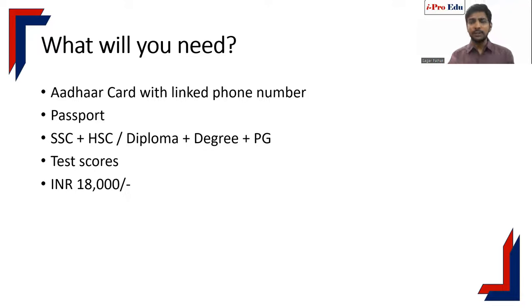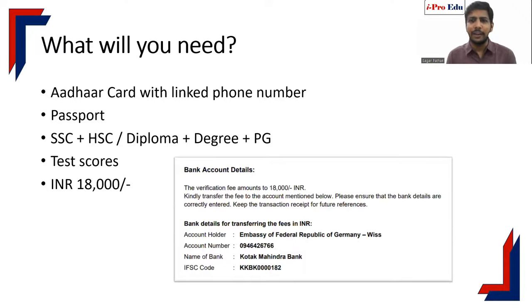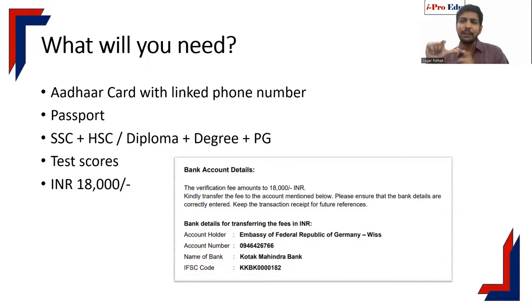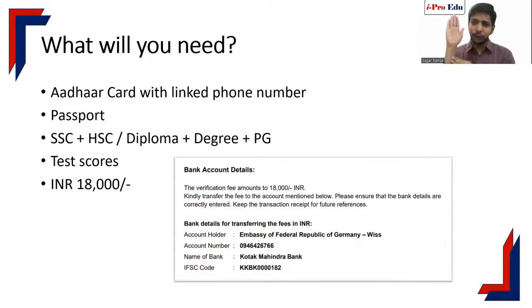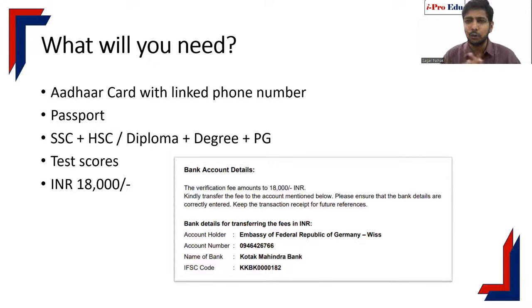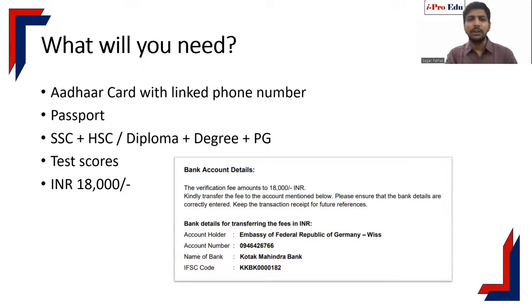The second alternative — which I personally prefer — is to transfer 18,000 rupees directly to the APS bank account. Their bank name, account number, and IFSC code are given on their website. You can log into mobile banking, internet banking, or walk into your branch and transfer the money. You will have the receipt immediately. Once you have the receipt you can fill in the form. In this demo, our student has already transferred 18,000 rupees to the APS bank account.